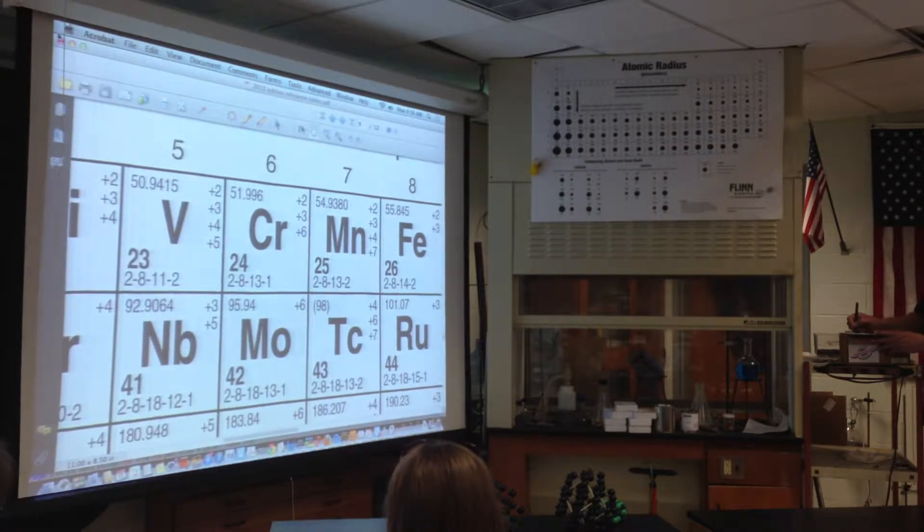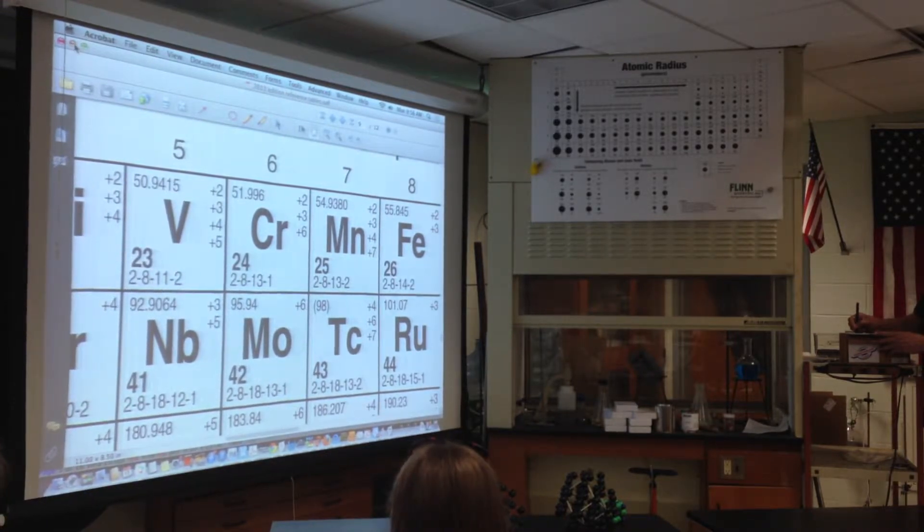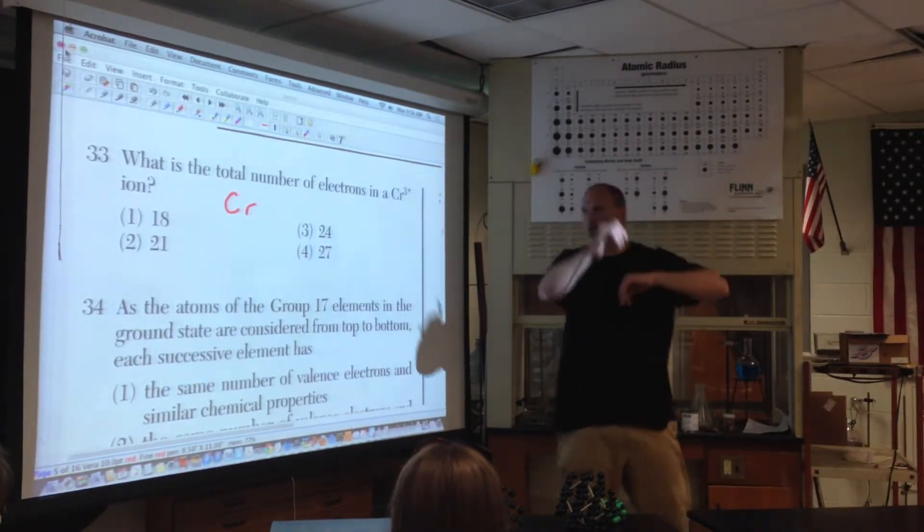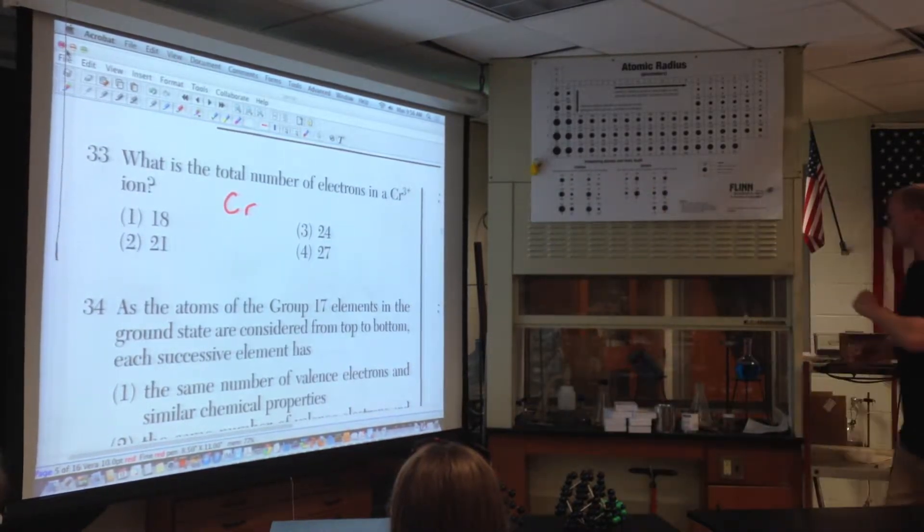Lost weight. Lost electrons got smaller. So 21's the answer. That could be a part two question, party people. That would pop up. You say, Mr. Grazi, I've never seen a part two question that simple. They're all that simple. They just hide them with stuff. We're going to see that today. So chromium, 21, choice two.